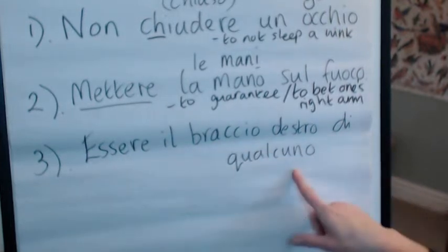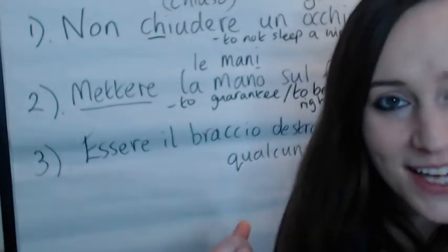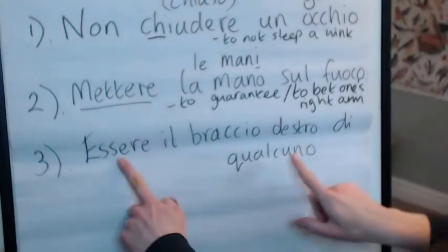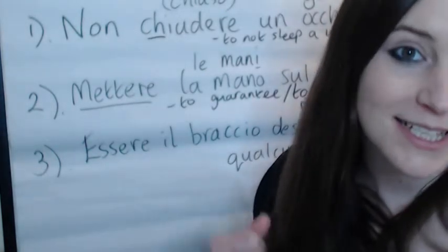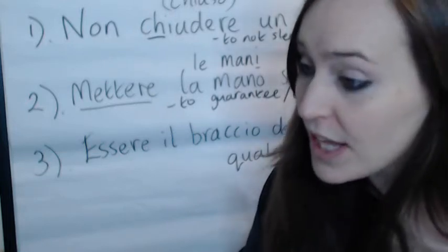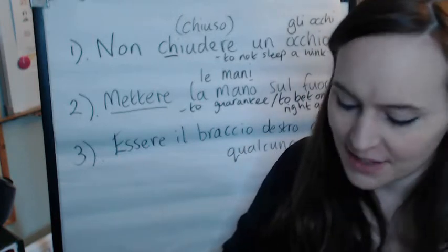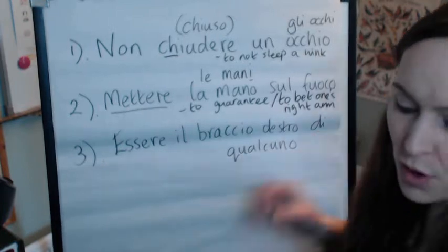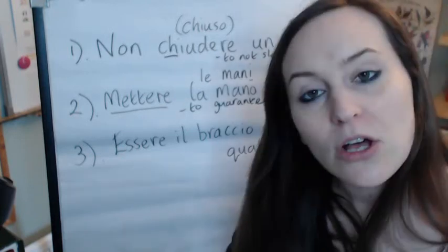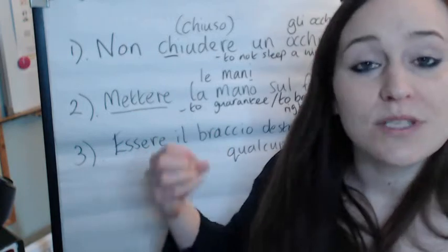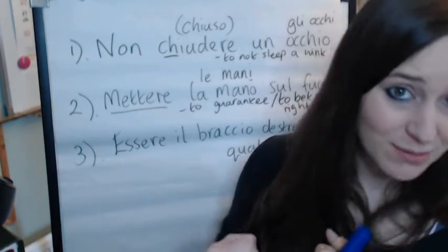Essere il braccio destro di qualcuno — qualcuno literally means someone. We're talking about being someone's right-hand man, or right-hand woman if you like. So let's give a definition in Italian: essere il braccio destro di qualcuno vuol dire essere il principale collaboratore di qualcuno — to be someone's main collaborator, someone you can trust and rely upon.